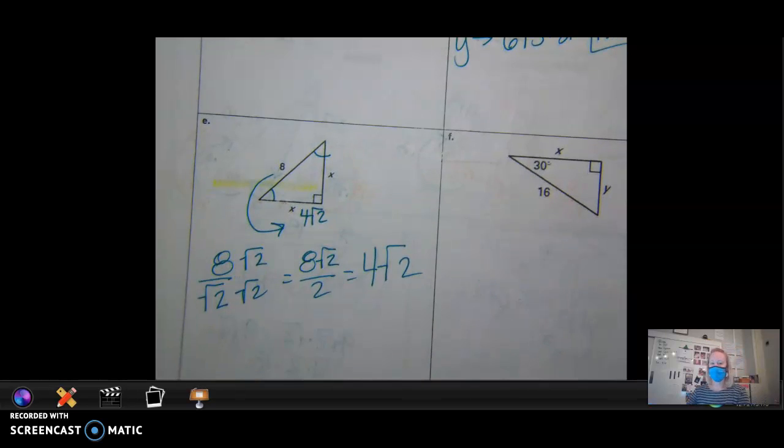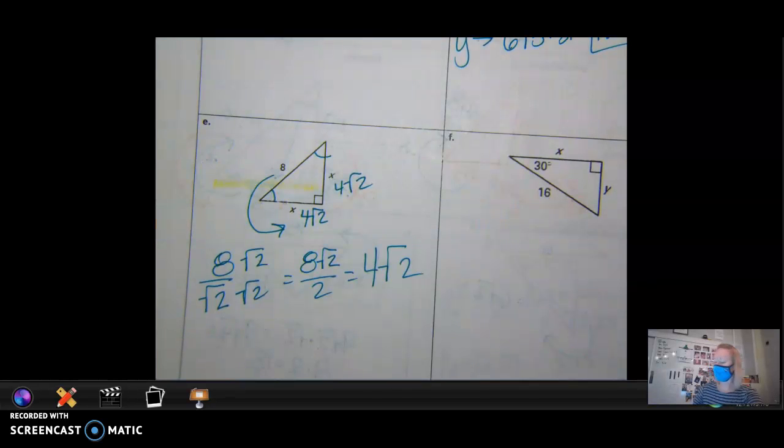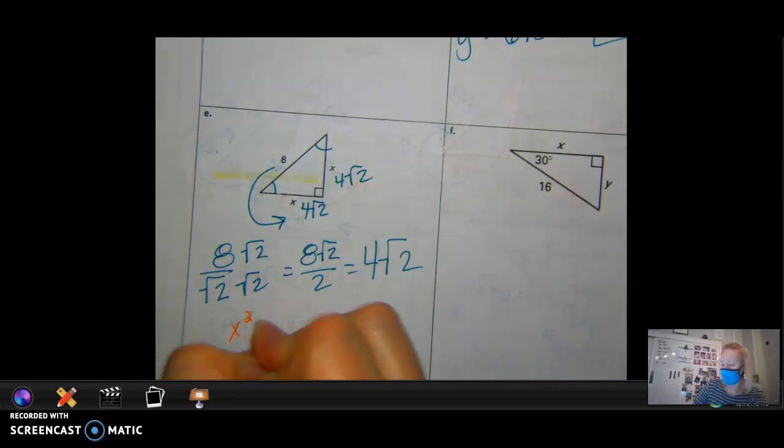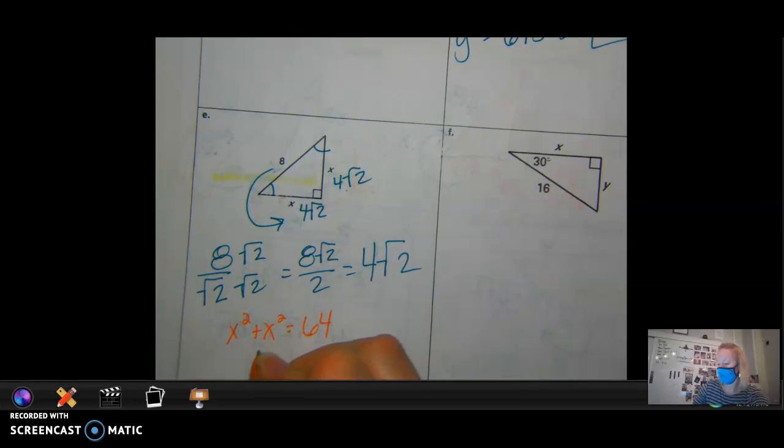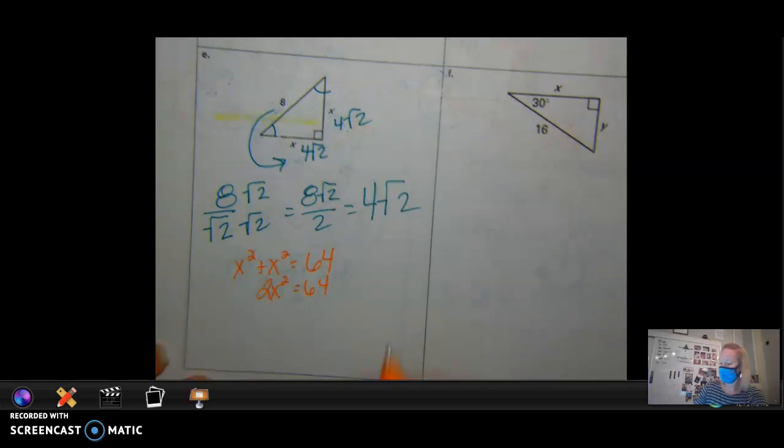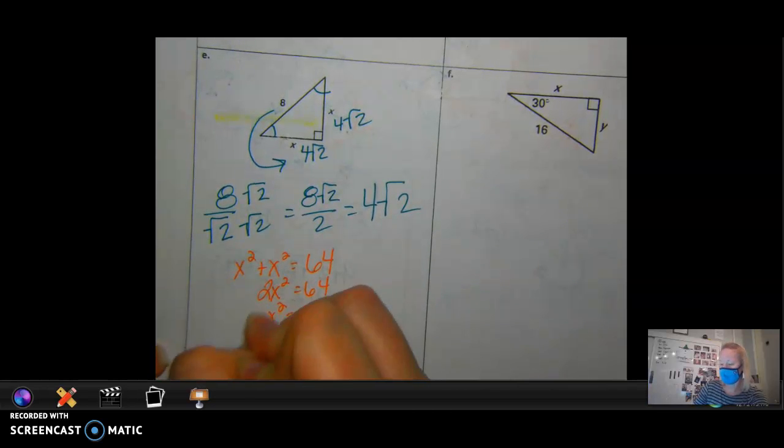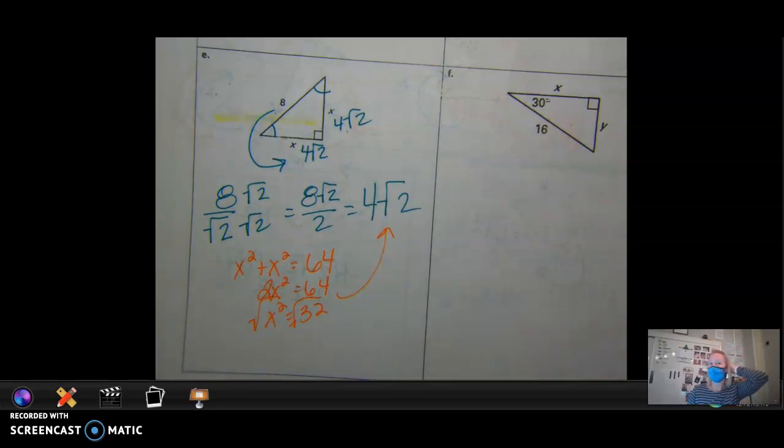Now, this was a question on the test, so both x's are 4 square roots of 2. But you could have used Pythagorean theorem, right? x squared plus x squared equals 64 by 8 squared. So that's 2x squared equals 64. Divide by 2, so x squared equals 32. And then if you square root that, you're going to get 4 square roots of 2.